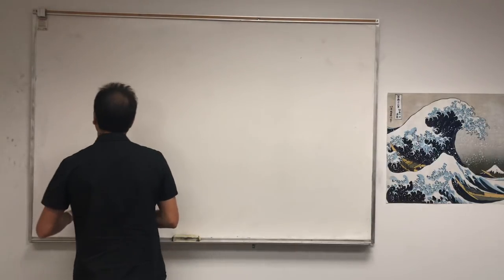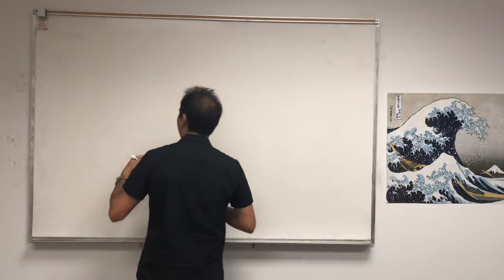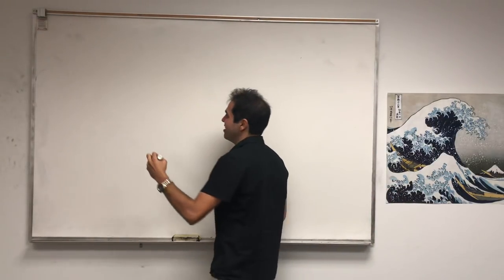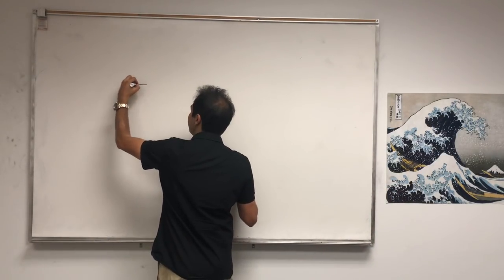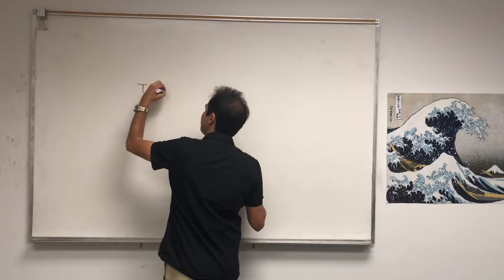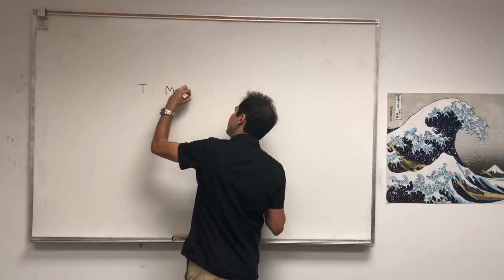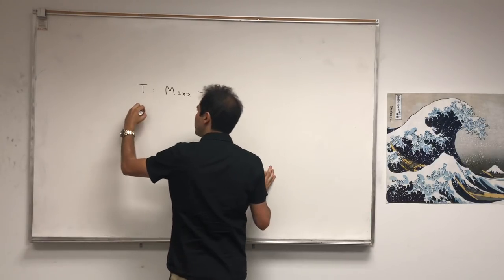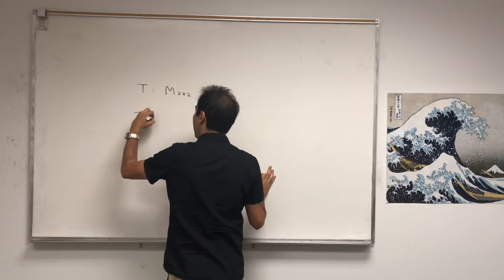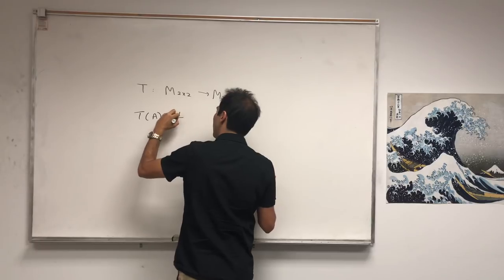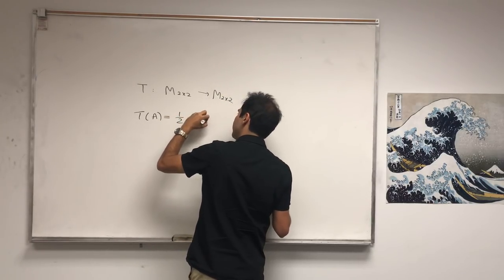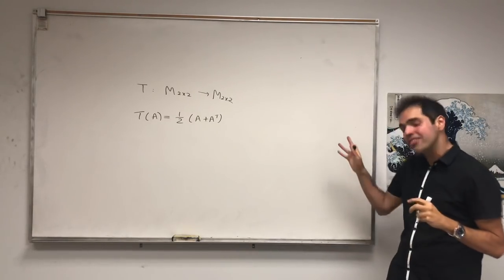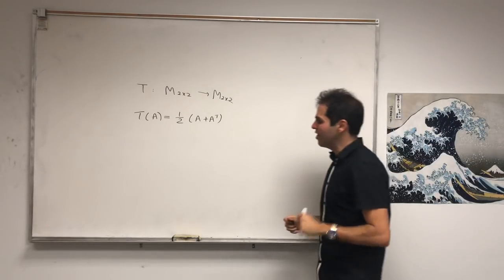The transformation I want to consider today is what's called symmetrization. Define T to be from the set of 2-by-2 matrices to the set of 2-by-2 matrices, where T of A equals one-half times A plus A transpose. At the end, I will tell you something really cool about this.